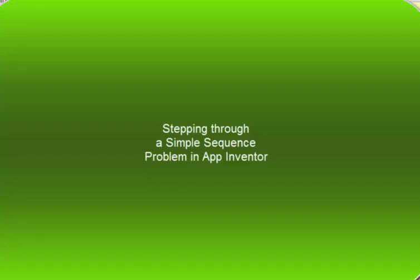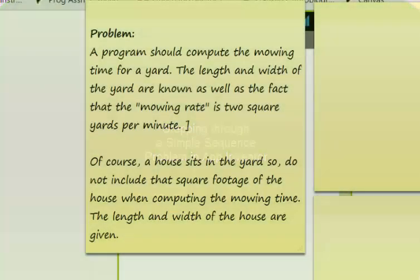In this video we're going to step through a problem that will be a simple sequence problem and then implement it in App Inventor. A program should compute the mowing time of 4 yards. The length and width of the yard are known, as well as the fact that the mowing rate is 2 square yards per minute. The house sits in the yard, so do not include the square footage of the house when computing the mowing time. The length and width of the house are given.